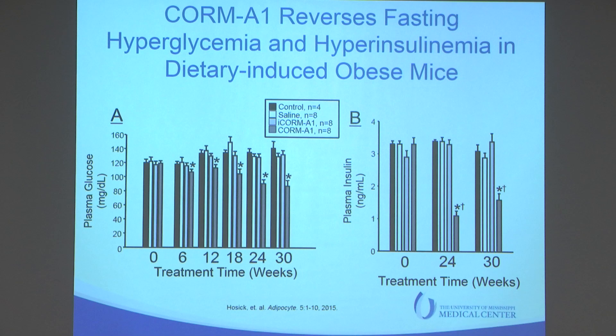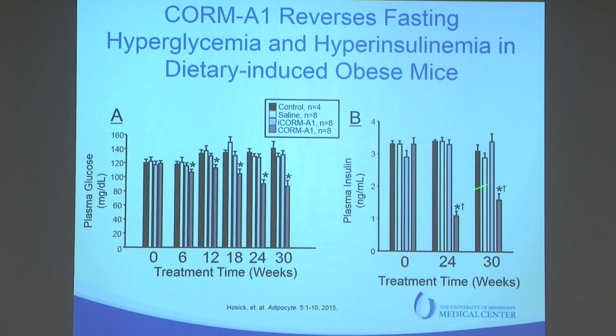One of the significant complications of obesity is that it promotes insulin resistance. We looked at insulin resistance in our CORM-treated mice by measuring fasting blood glucose and fasting insulin levels. We saw effects of CORM in lowering fasting blood glucose levels as early as six weeks of treatment, and this effect was sustained throughout the study. It also had a dramatic effect on plasma fasting insulin levels — basically normalizing the fasting insulin levels at weeks 24 and 30. So not only does it promote weight loss, but it also increases insulin sensitivity in these animals.